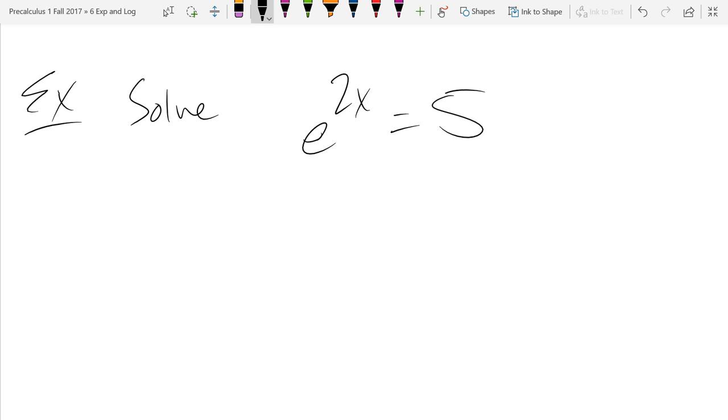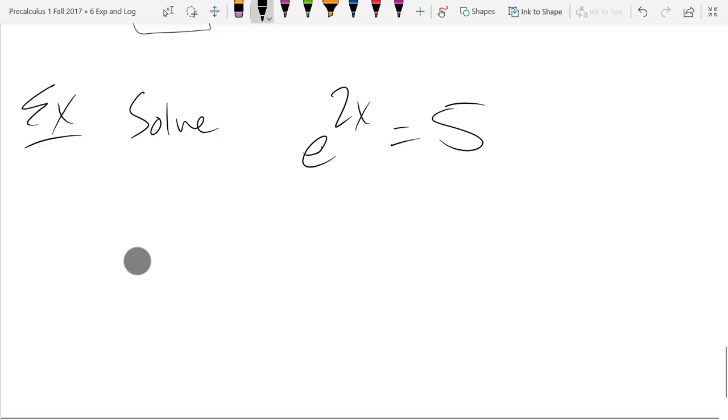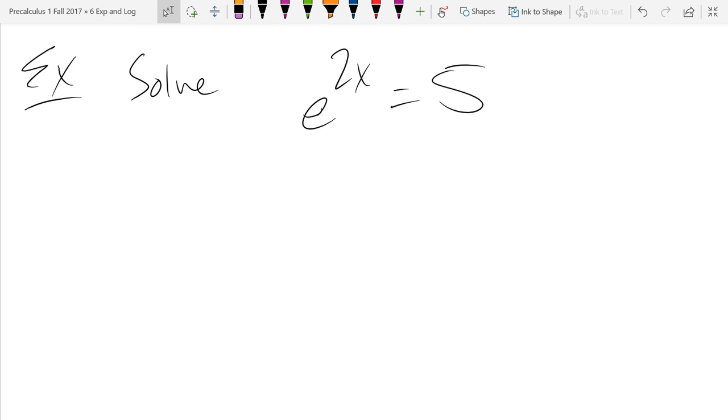Solve e to the 2x equals 5. How in the world can we solve for x here? I can't really write 5 with the base of e very easily. If I worked really hard I might be able to, but I don't want to work that hard.